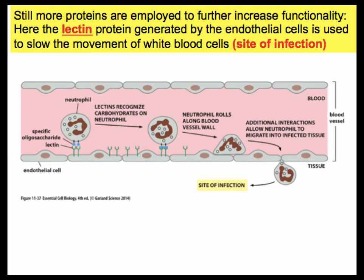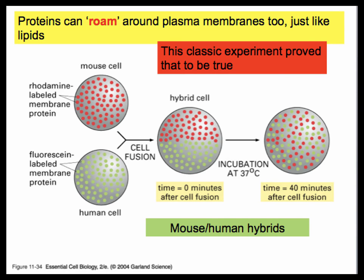This slide represents a historical experiment where scientists proved that proteins embedded in the membrane are not fixed to a particular location — they are free to move in any direction. Scientists labeled mouse cell proteins with one fluorescent dye and human cell proteins with a different color, then fused the cells together using various techniques. Within about 40 minutes, proteins from the mouse half and the human half were intermingled, proving that proteins are motile.